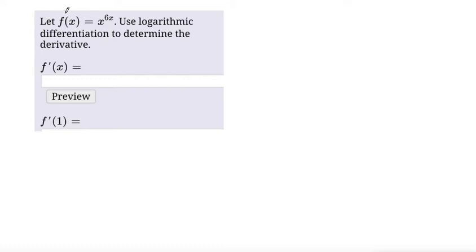This problem says let f of x equal x to the power of 6x. Use logarithmic differentiation to determine the derivative. We can't use the power rule on this type of function because we have a variable in the exponent as well, and we're supposed to use logarithmic differentiation. So in the first step, let's write y is equal to x to the power of 6x.